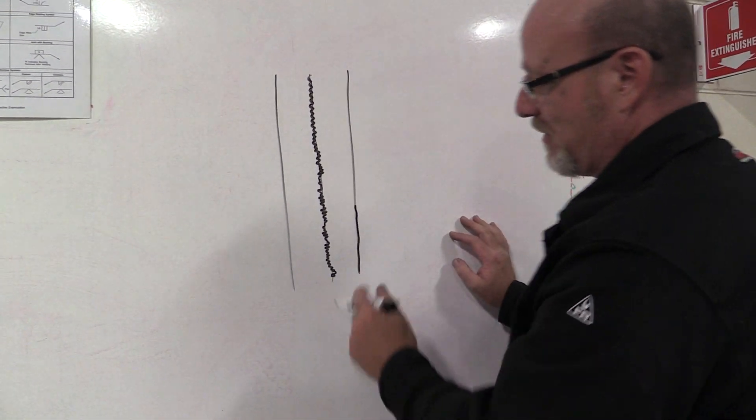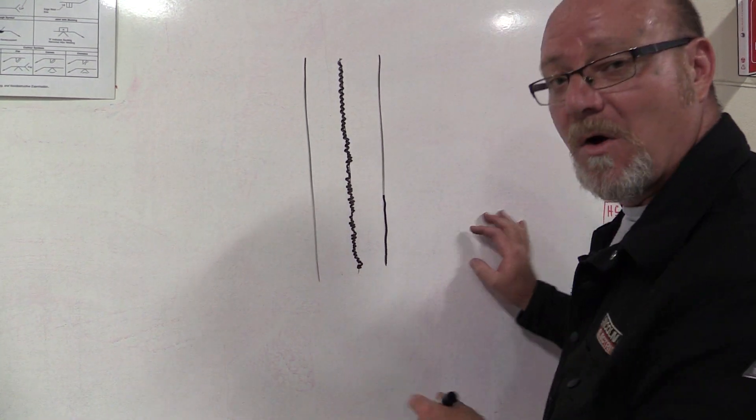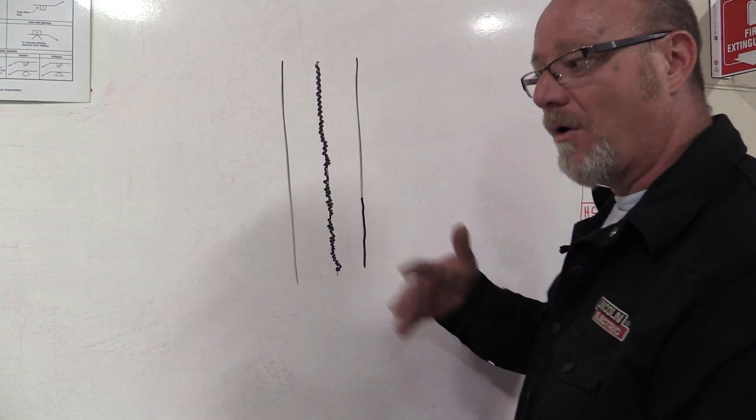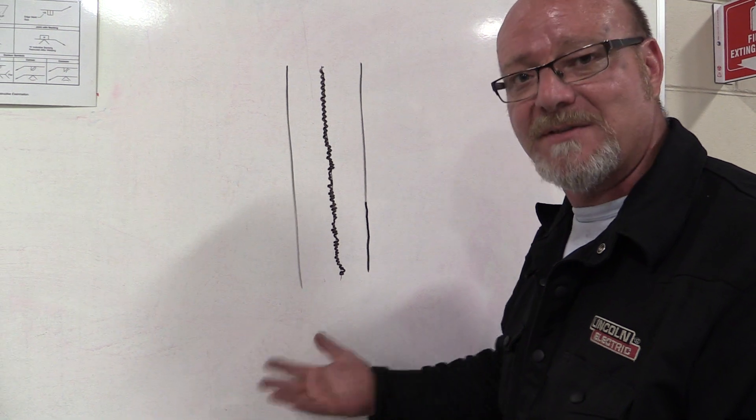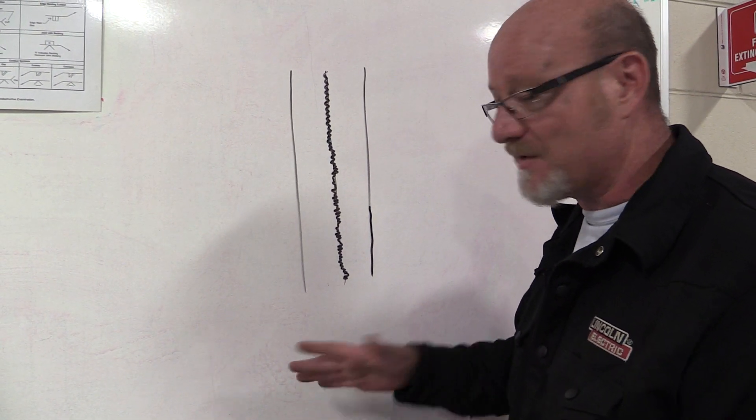There's the root. It's kind of sloppy but that's okay, it's the root. Now what we're going to do is we're going to come over this with our 7018 or your MIG welder or your flux core. We do weaves and stringers in all welding processes including TIG. Works the same way.